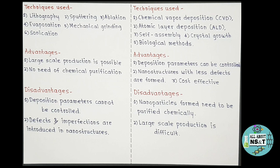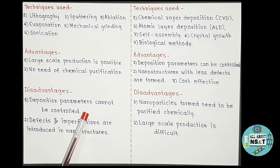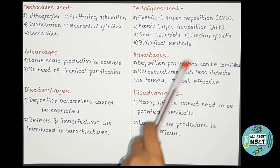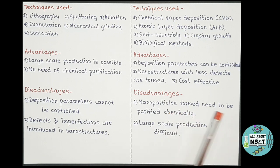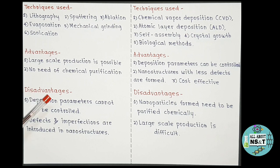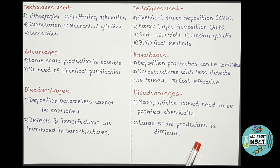Now the disadvantages. Disadvantages of the top-down method are: deposition parameters cannot be controlled, and defects and imperfections are introduced in nanostructures. Disadvantages of the bottom-up method are: nanoparticles formed need to be purified chemically, and large-scale production is difficult — whereas both of these are not issues with the top-down approach.